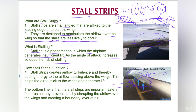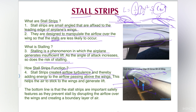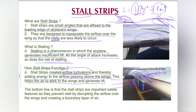As the angle of attack increases, the risk of stalling also increases. How do stall strips function to avoid stalling? They create airflow turbulence — this is very important — thereby adding energy to the airflow passing above the wing. As the angle of attack increases, the stall strips generate turbulence in the air flowing above the wing, adding energy to help it stick to the upper part of the wing so that lift can be generated.